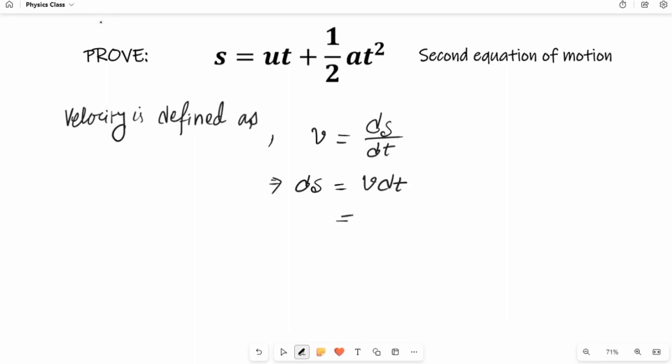Now from the first equation of motion we know that v equals u plus at times dt here. This is our equation one.